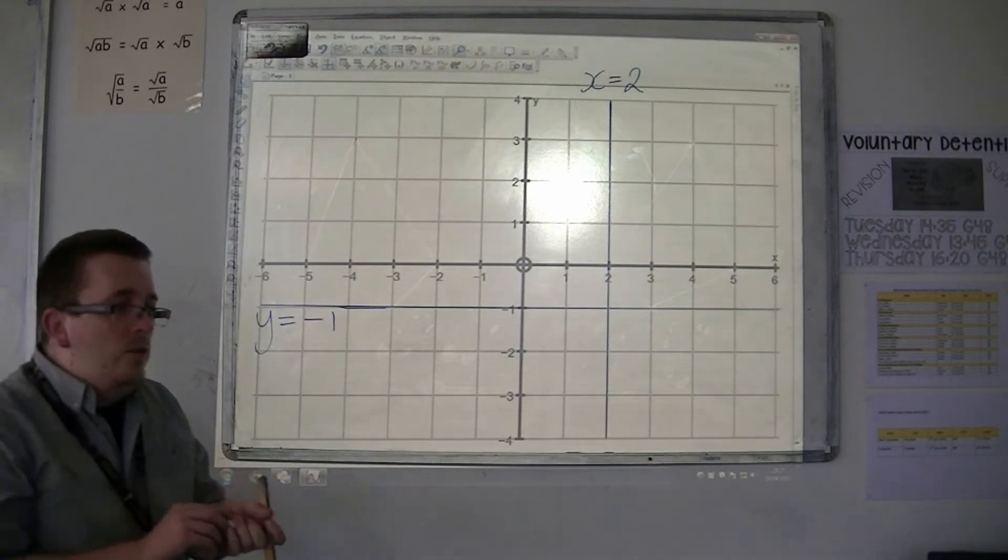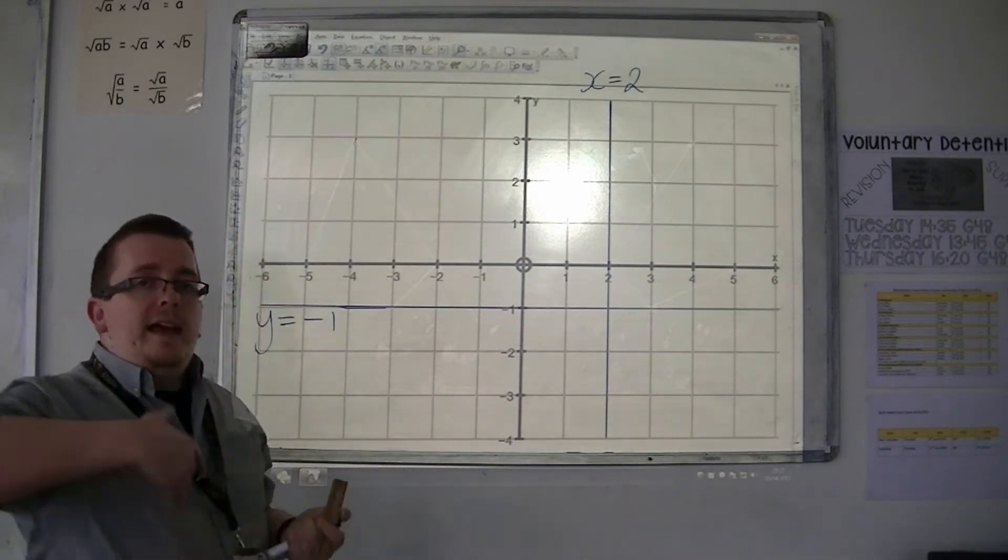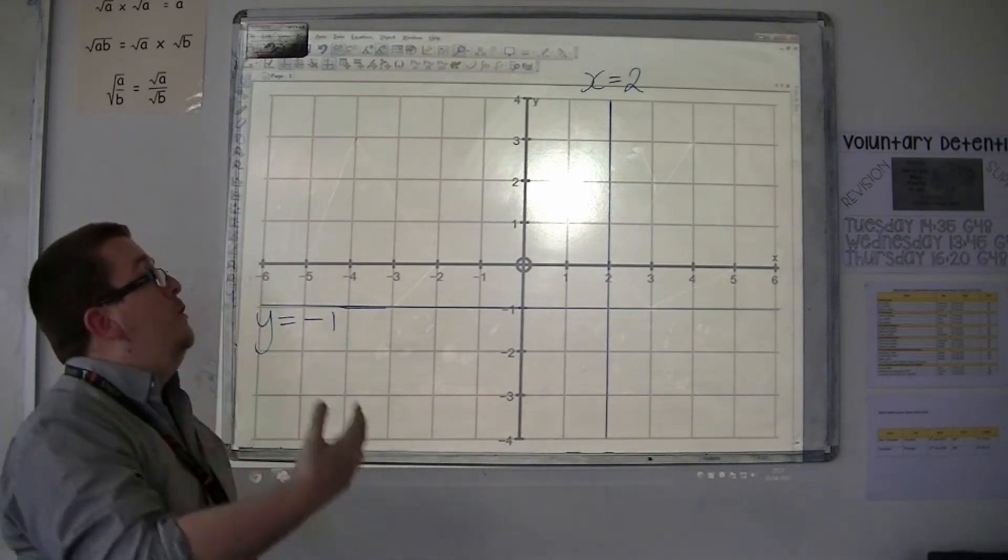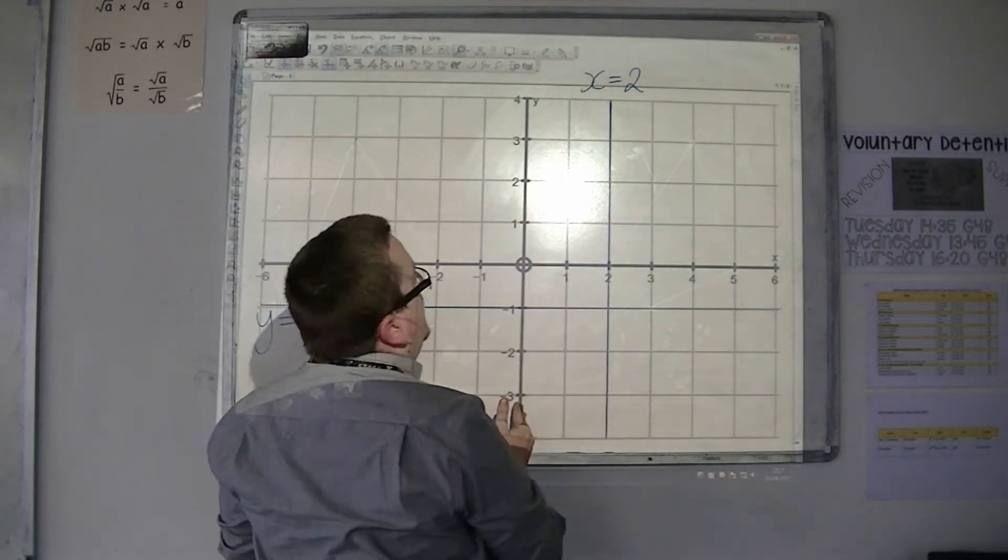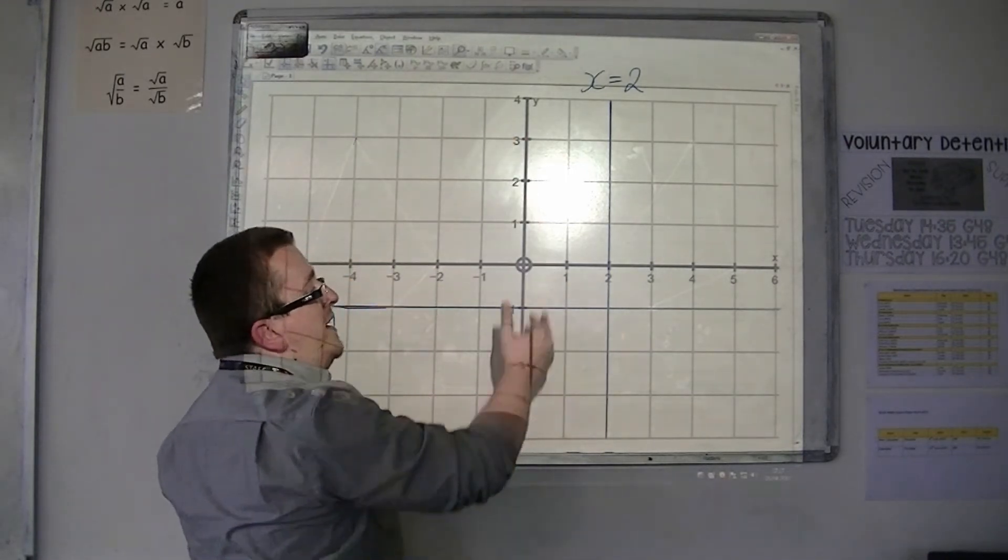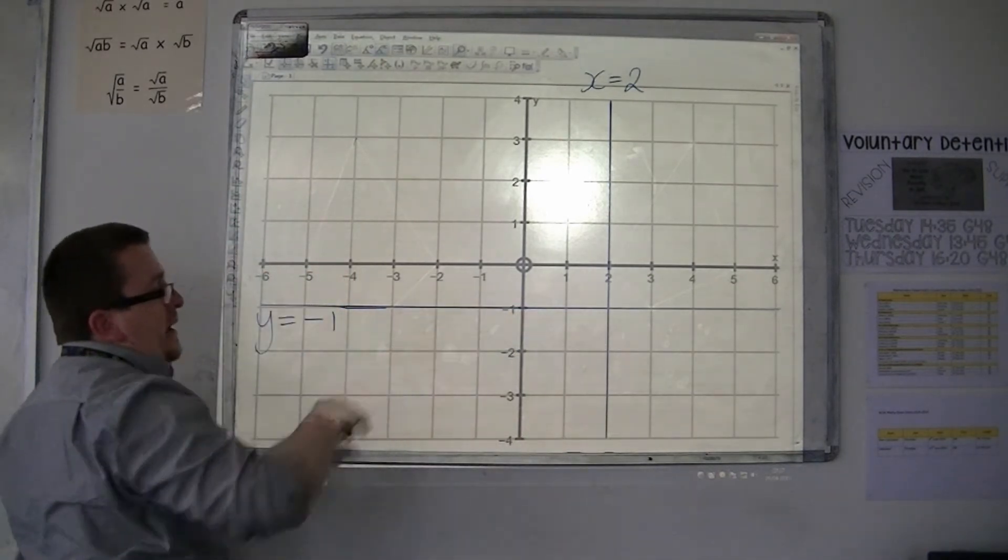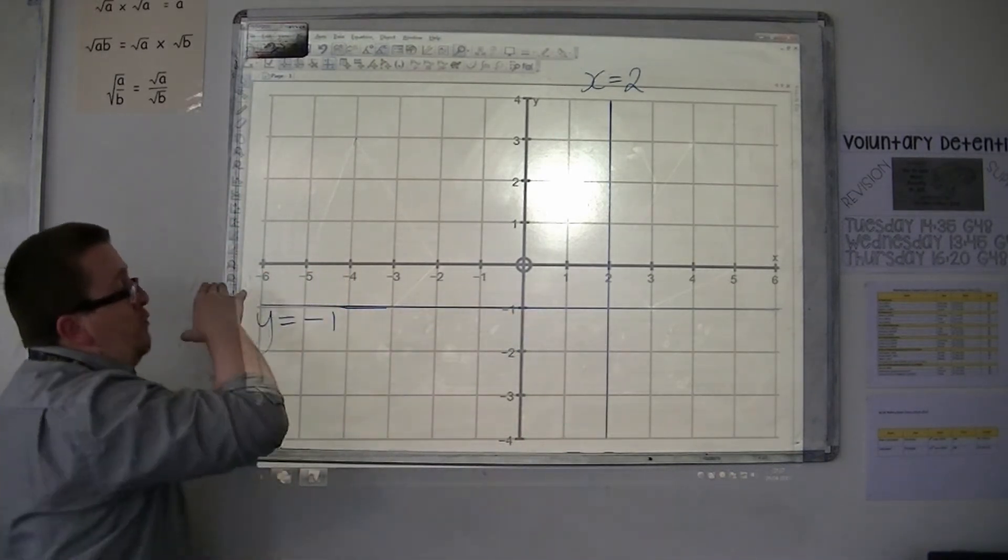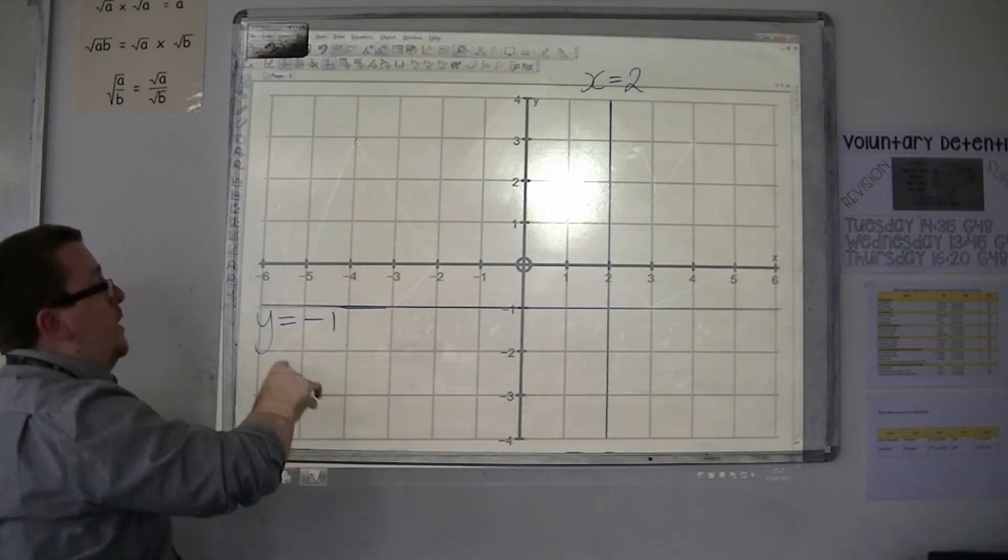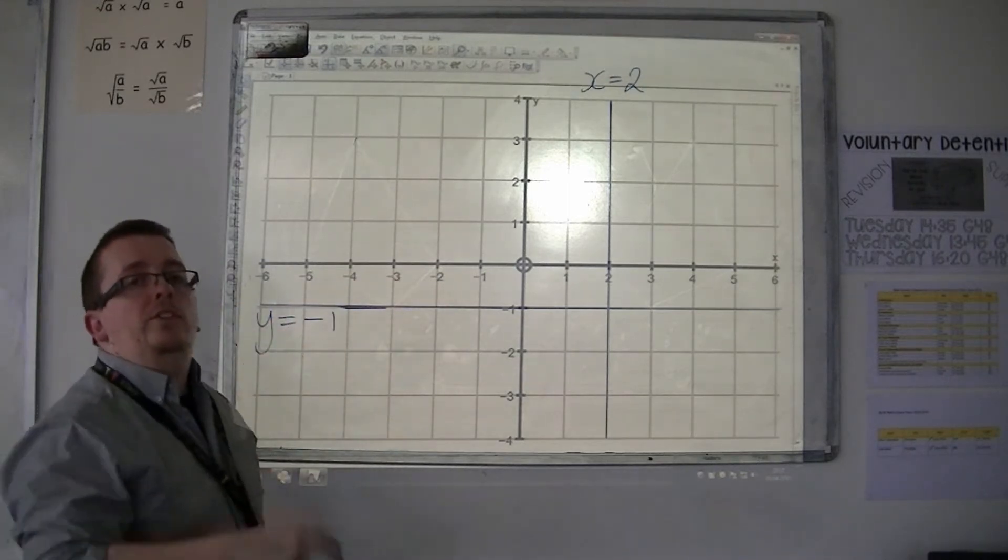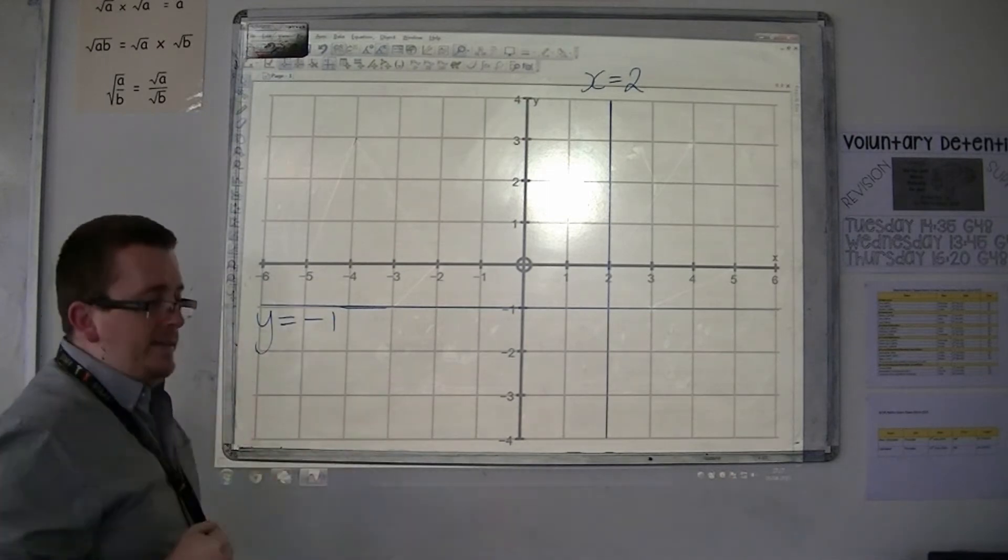So it's round the wrong way to how you would expect, because you know that the y-axis is vertical, but vertical lines are given as x equals. And we know that the x-axis is horizontal, but horizontal lines are given the equation y equals. So it's the opposite to how you might expect it.